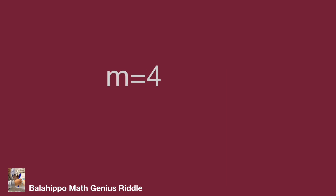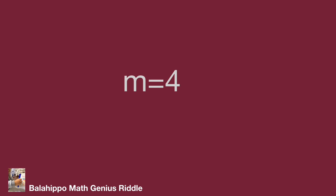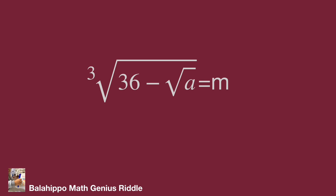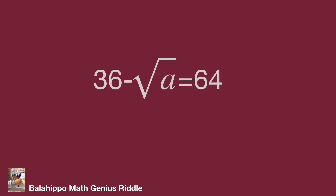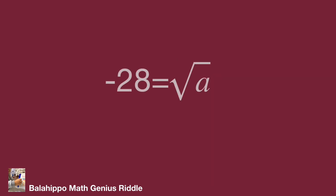While m equals 4, substitute m by 4 into cube root of 36 minus a squared: cube root of 36 minus a squared equals 4. Cubing both sides of the equation gives 36 minus a squared equals 64, so a squared equals negative 28. This is not a real number for a squared, so it is a false answer.